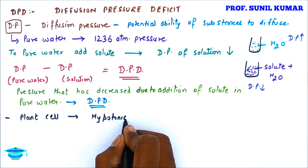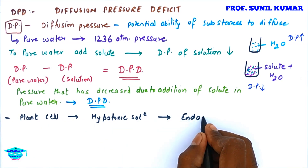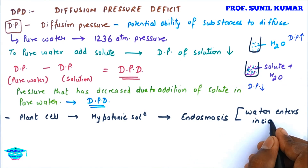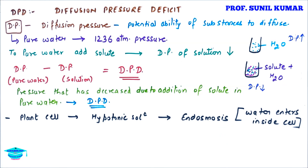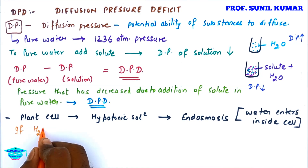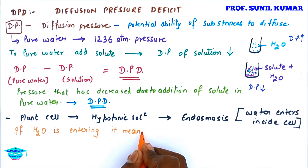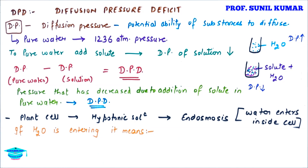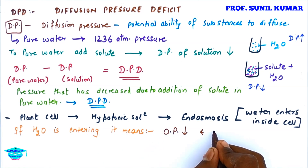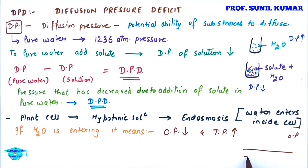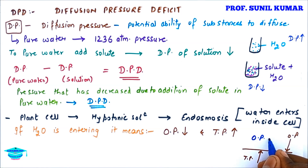Now when we talk about DPD, there are certain terms to understand. Let's take a plant cell and keep it in a hypotonic solution. When you keep it in a hypotonic solution, endosmosis will take place — meaning the pressure inside the cell is going to swell up. As water enters inside, the turgor pressure inside the cell is going to increase.